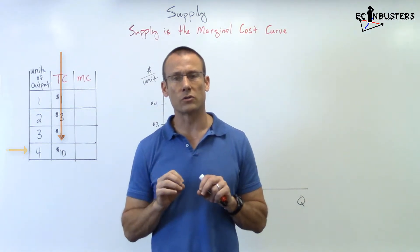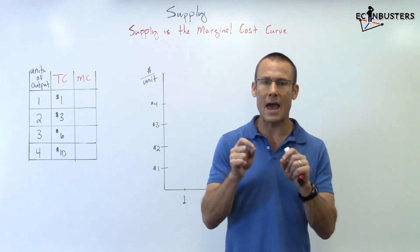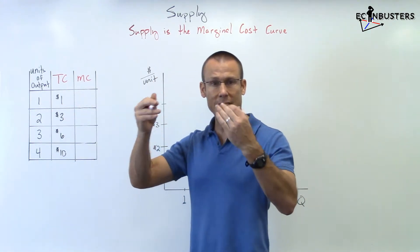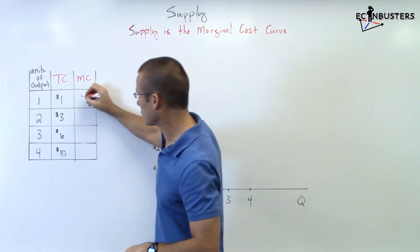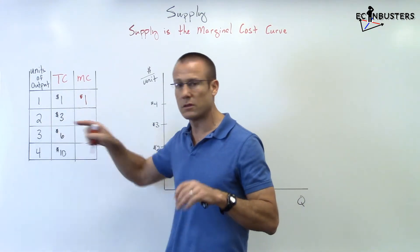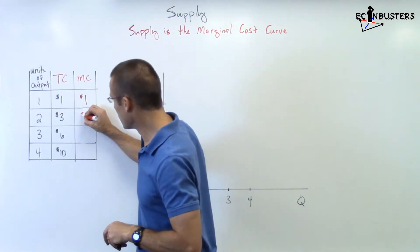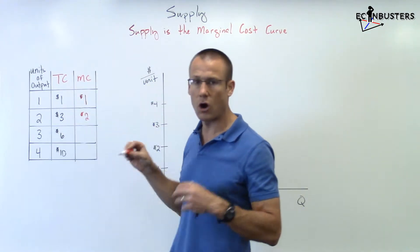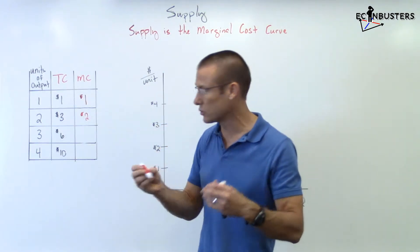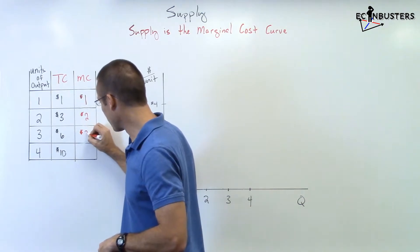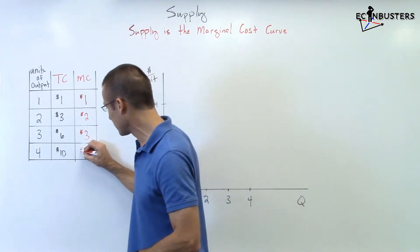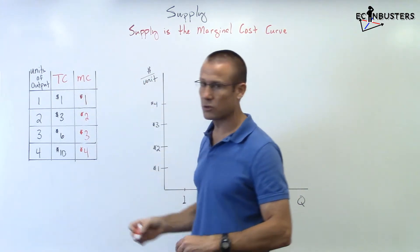What we really want to know is our marginal cost, because in economics we make decisions at the margin. When we make the first one, we're going from 0 to 1 unit — cost goes from $0 to $1, so marginal cost is $1. The second unit: marginal cost is $2, since total cost goes from $1 to $3. To make the third good, total cost goes from $3 to $6, so marginal cost is $3. To make the fourth good, it costs $4 additional — marginal cost is $4. This is our marginal cost curve.